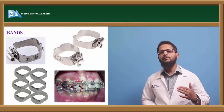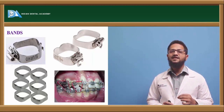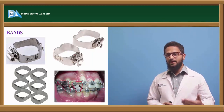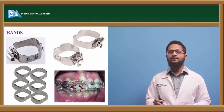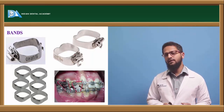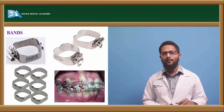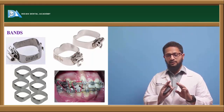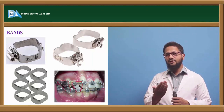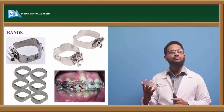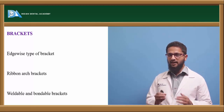Bands are mostly available in stainless steel because it is biocompatible and has adequate strength. Bands are available in various thicknesses and sizes, with each tooth having a specific number; pre-formed bands are also available. Thicker and wider bands are used for posteriors; thinner and narrower ones are preferred for anteriors. The superficial surface of the band material — the surface facing outside — is smooth, while the surface that will be cemented to the tooth is rough to increase retention.